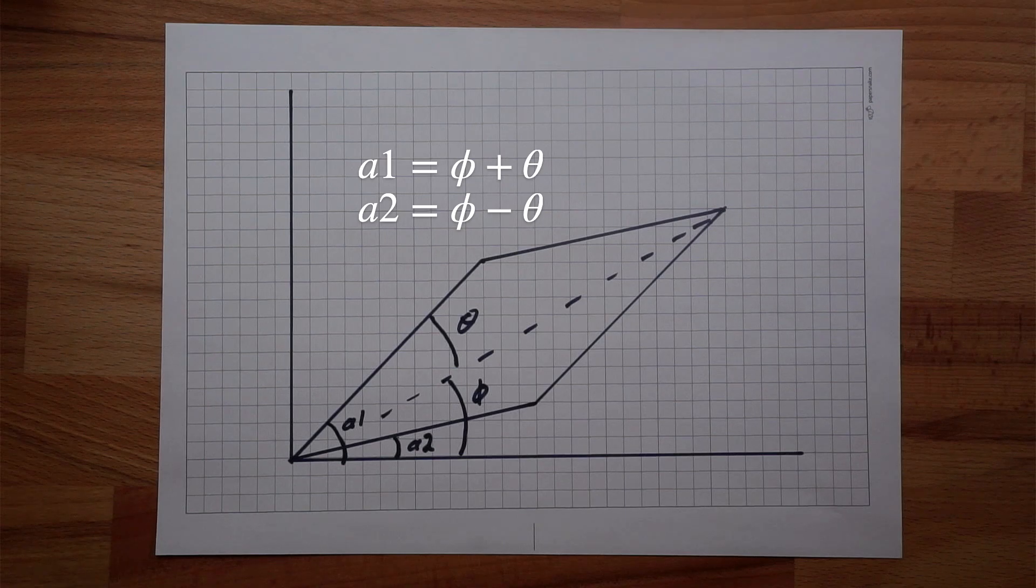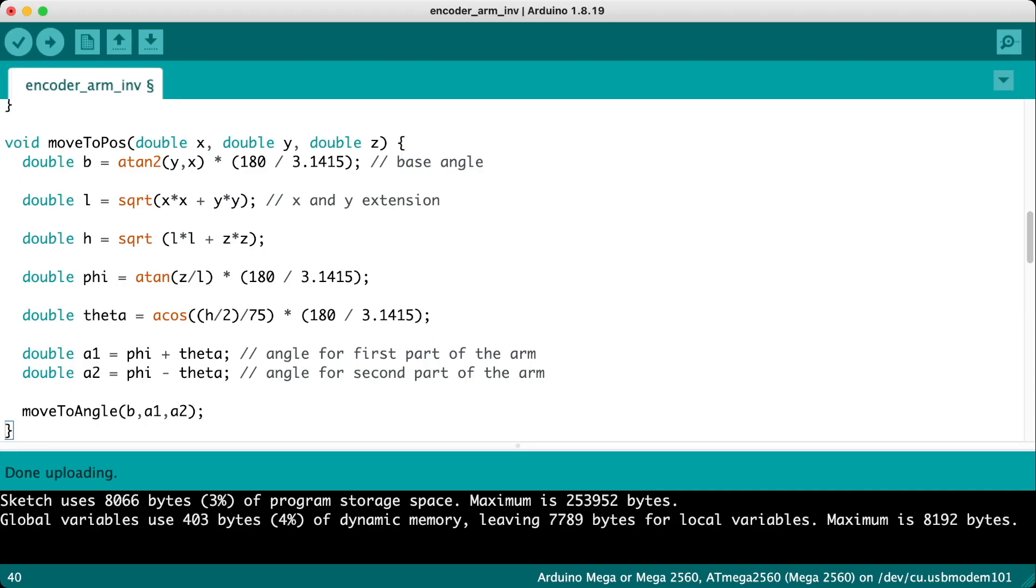Let's have a look at the code. So this small function is all we need to be able to perform the inverse kinematics. We simply take in our x, y and z coordinates and then do all the trig and Pythagoras theorem that we were just going over. Translate them into the A1 and A2 angles that we just worked out and then tell our arm to move to those angles.